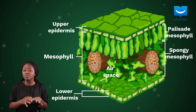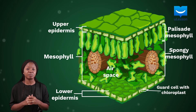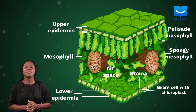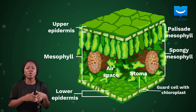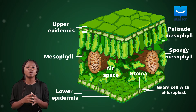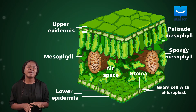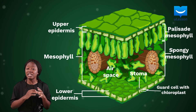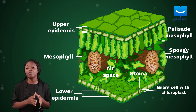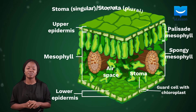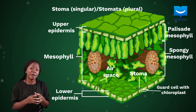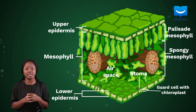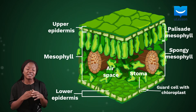The guard cells are bean-shaped cells in the lower epidermis and they surround or guard the stomata. They help in controlling the rate of transpiration or gaseous exchange by opening and closing the stomata. They are the only cells in the epidermis that contain chloroplasts, and this gives them the added advantage of contributing to the production of photosynthetic products. Stomata is plural for stoma, and they are pores in the lower epidermis that open and close to control gaseous exchange or the movement of gases into the leaves.